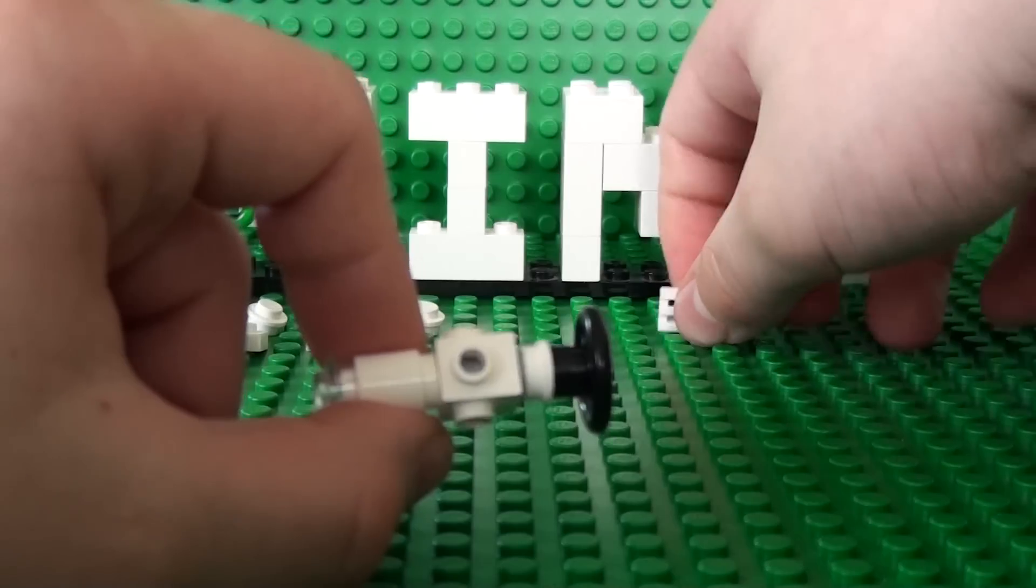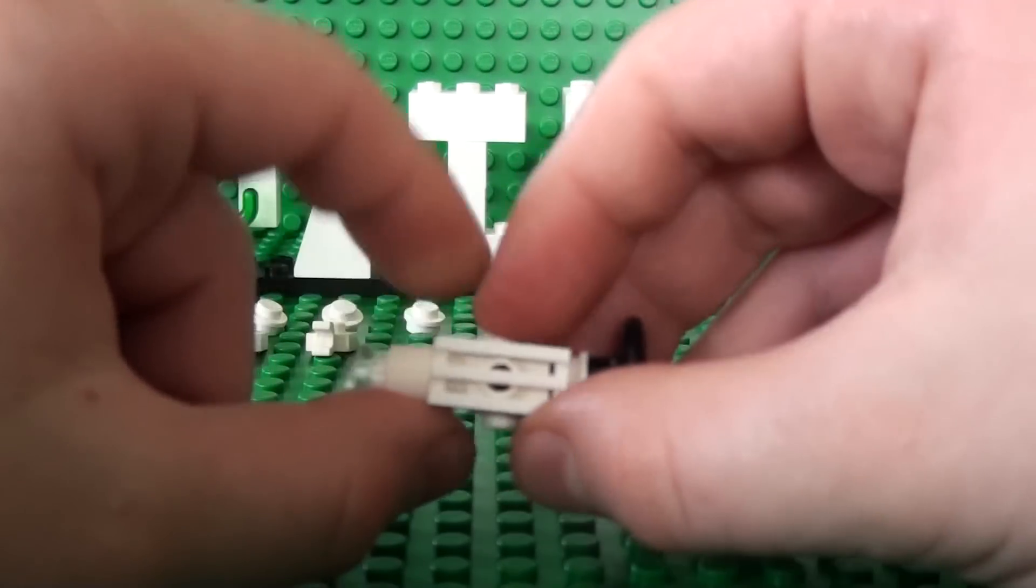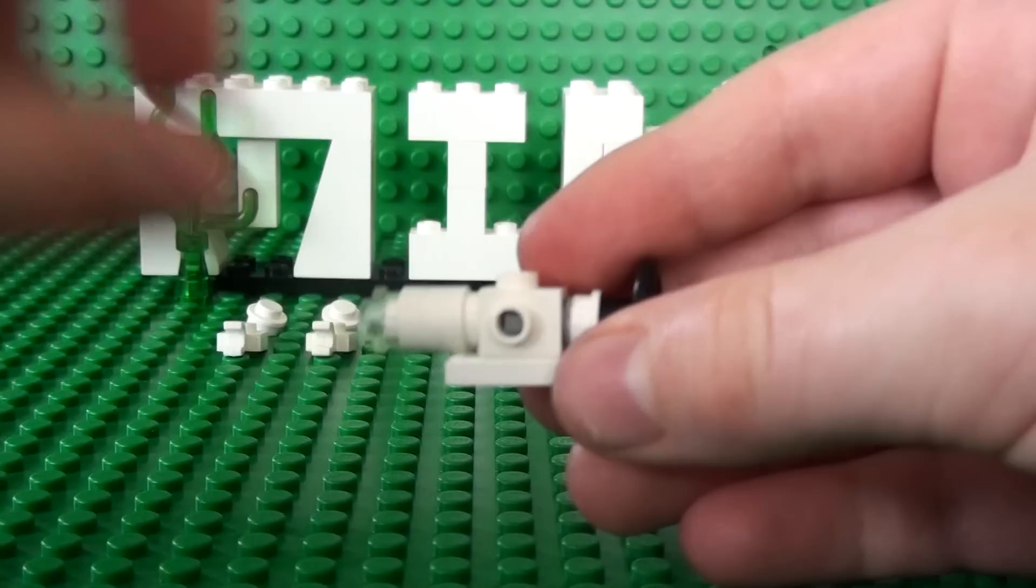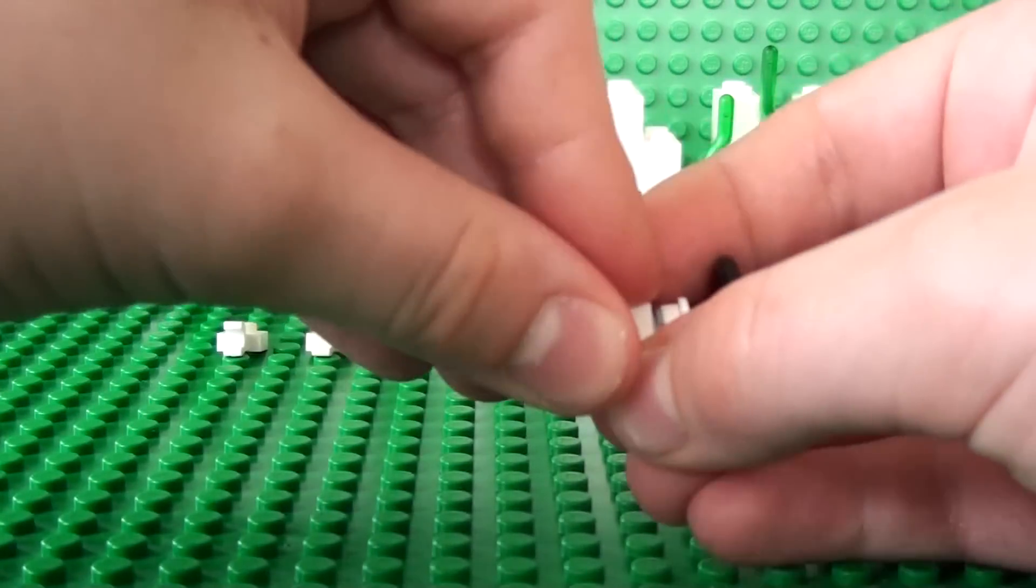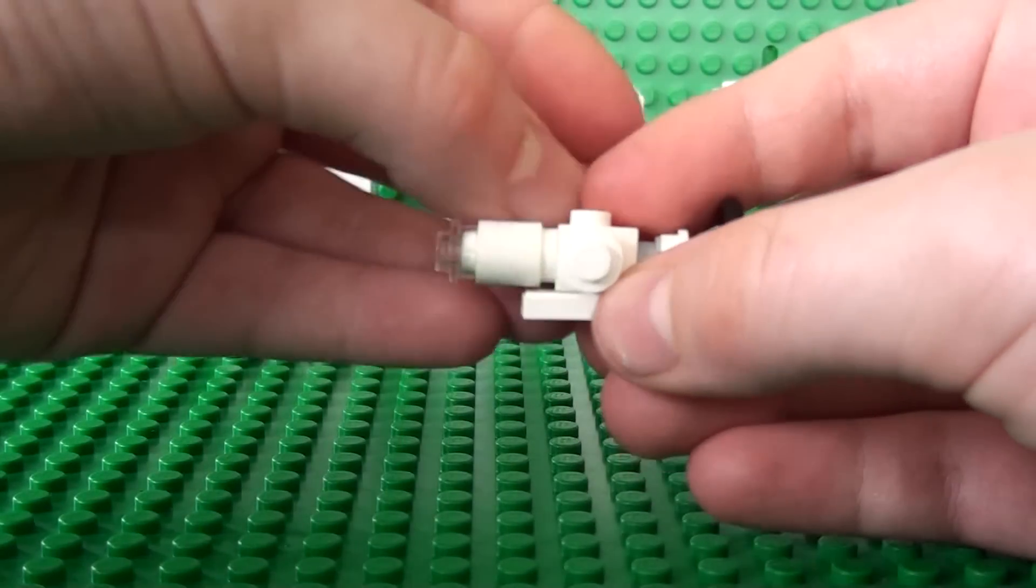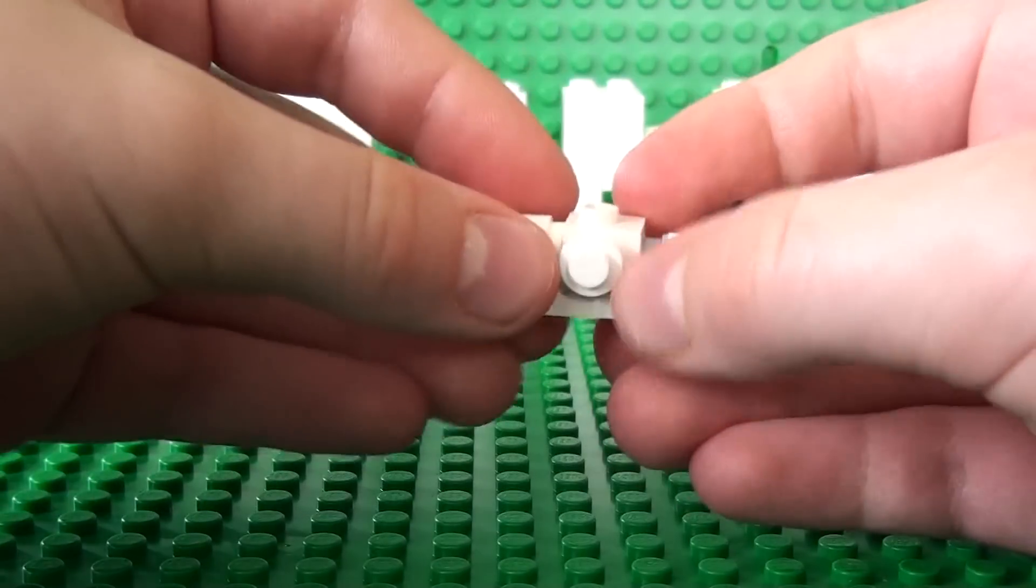Next you take the grill piece and put it underneath the submarine. And you take all three studs and put them on the remaining spaces.